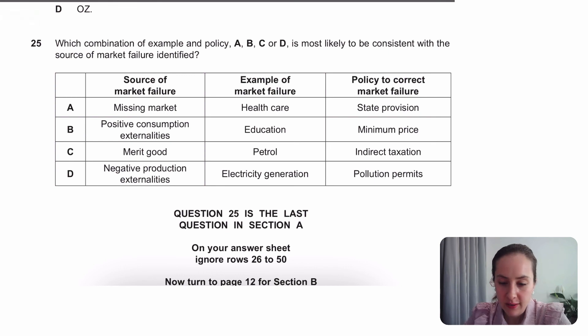Which combination is most likely to be consistent with the source of market failure identified? Missing market should be a public good, which is not healthcare. Healthcare is excludable. If you don't have the money to pay for surgery or the doctors don't have the time, they could say no thank you. We can't help you. So that's not a public good. Positive externalities in consumption. You want something that helps not just yourself, but other people. And it could be education. For example, by increasing your education levels, you might help your future workplace at just creating better products in the future. To correct the market failure, minimum prices and maximum prices too, they decrease quantity. That's the wrong thing. You want more education. So that didn't work there. Merit good is not petrol. Well, I mean, I guess you could kind of argue, but you don't want to tax a merit good.